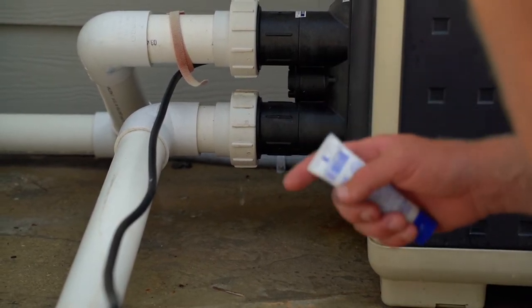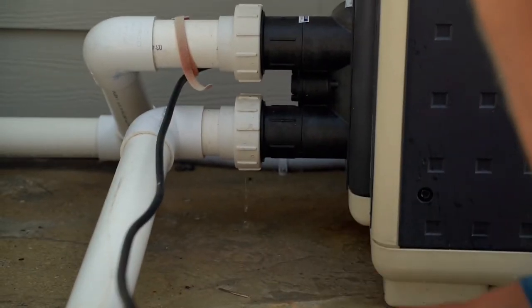So we're going to go ahead and take that off now and then we're going to fix the o-ring for it. Never want to use channel locks on these unions.